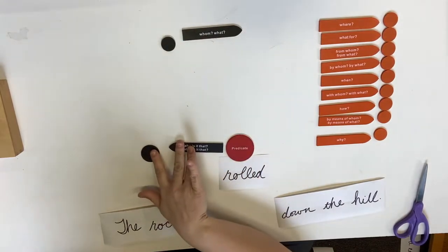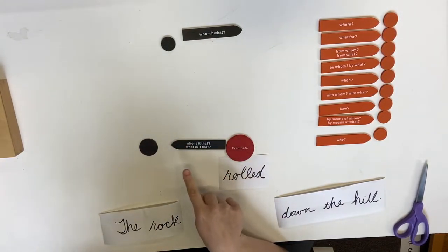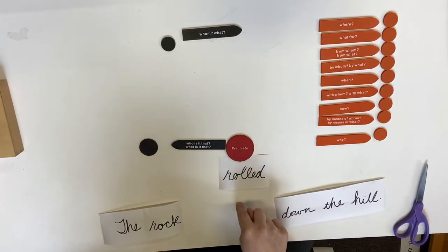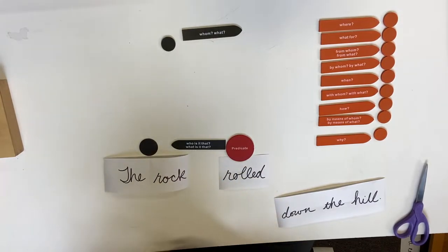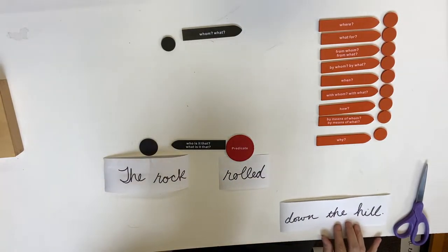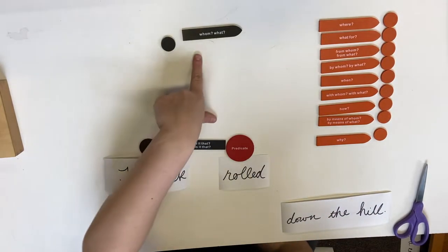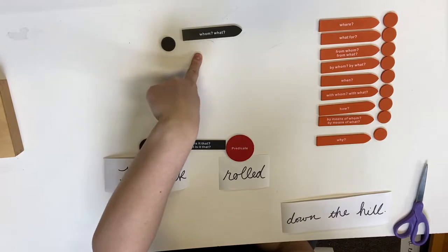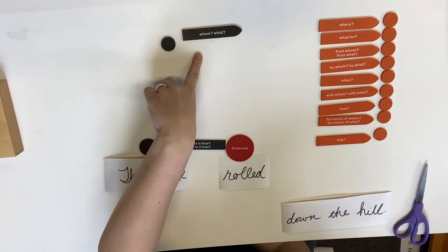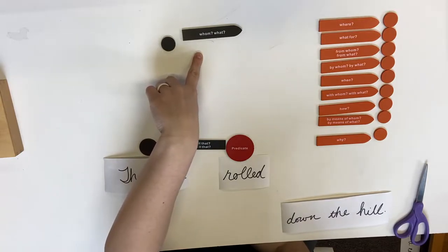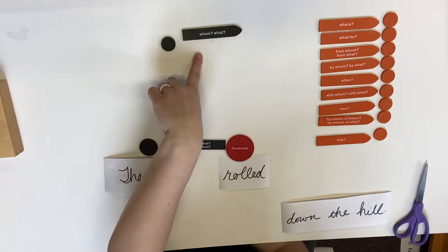Remember, this is the next question we always ask first: who or what is it that rolled? What rolled? The rock. So now we have 'down the hill' left. The next thing we usually ask is: the rock rolled whom? The rock rolled what? 'Down the hill' doesn't really answer that, does it?